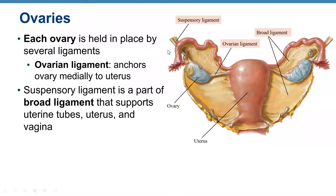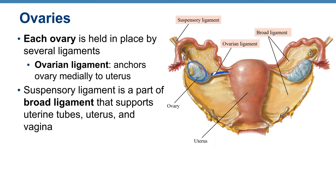Each ovary is held in place by several ligaments, including the ovarian ligament, which anchors the ovary medially to the uterus, and the suspensory ligament, which is part of the broad ligament that supports the uterine tubes, uterus, and vagina.